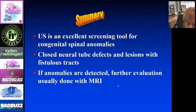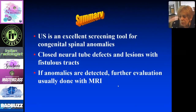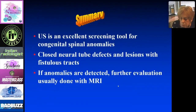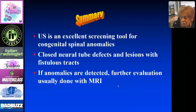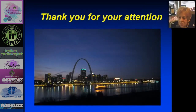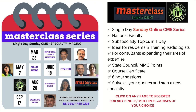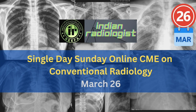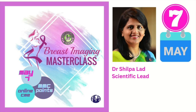In summary, ultrasound is a great tool for evaluating the spine in the neonate. You can see closed neural tube defects and lesions with associated cutaneous stigmata. If anomalies are detected, further evaluation is often done with MRI to get better anatomic definition for the surgeons. Thank you for your attention.